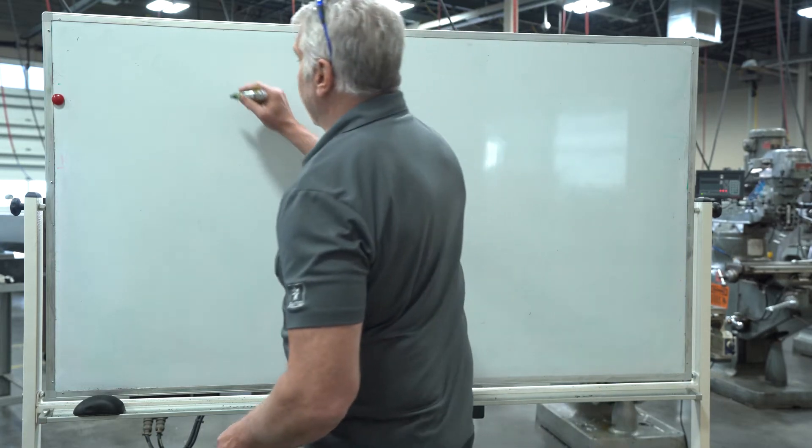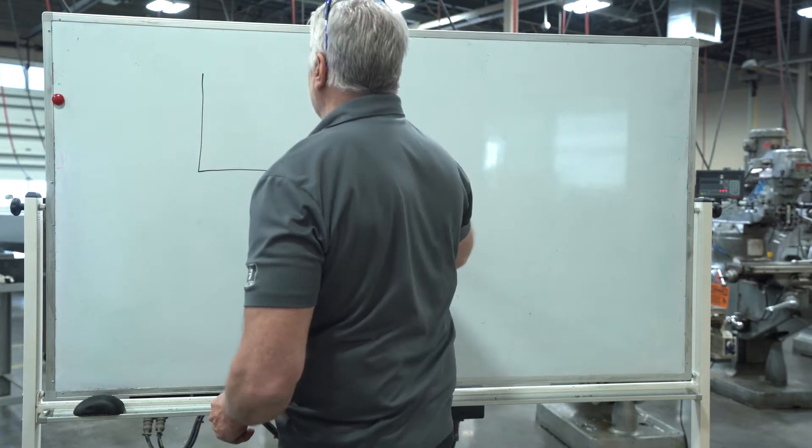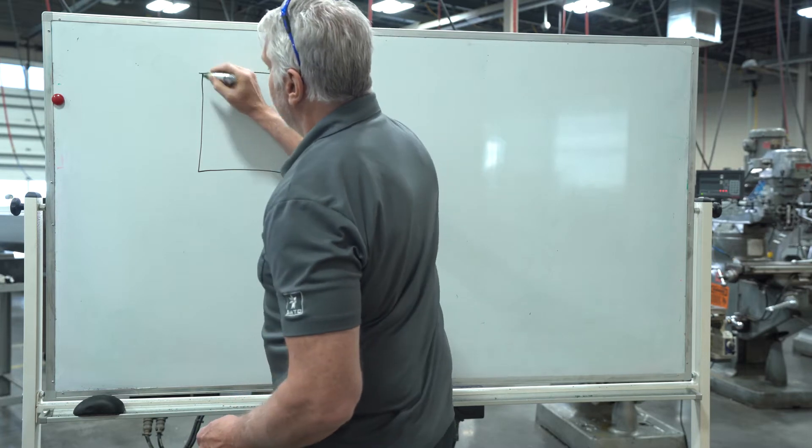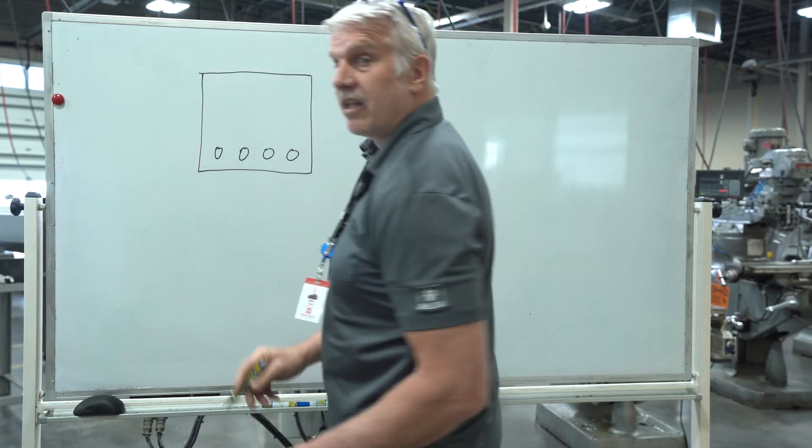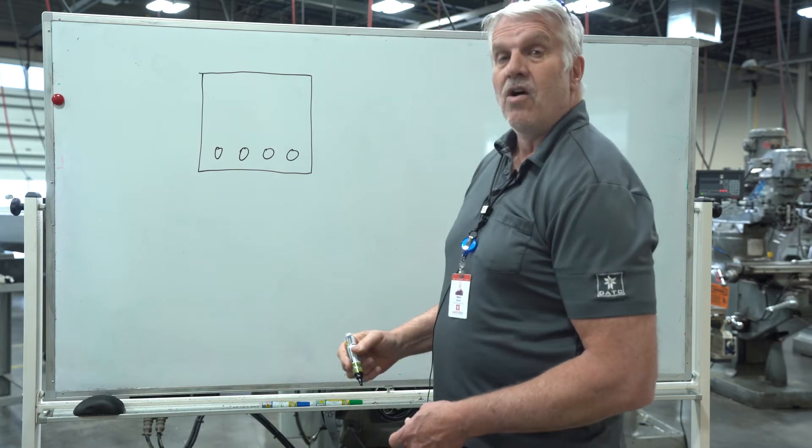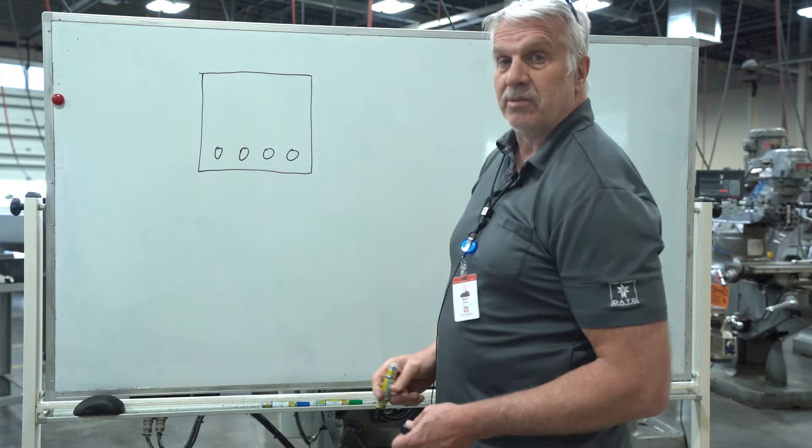So we've got to know where we're going to drill our holes. The part kind of looks something like this. And there's going to be a hole here, here, here, and here, basically four holes, or four places that we're going to do a spot drill.